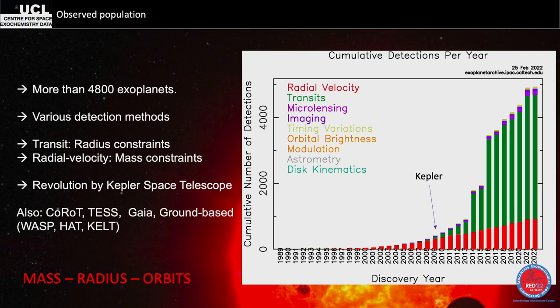What does Gaia do? Astrometry. From all those telescopes we can get the mass, radius, and orbital elements of planets, which tells us a lot already. So by detecting planets, we also start to characterize them a little bit.